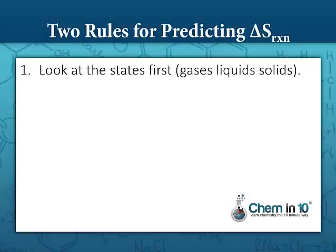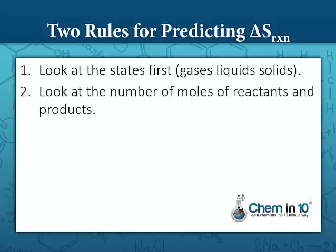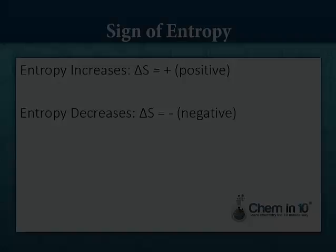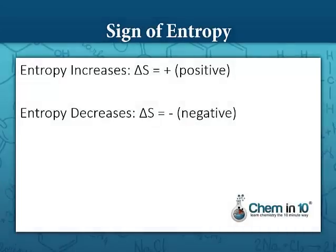There are two rules that we use for predicting delta S, the entropy change in a reaction. First we look at the states — whether we're talking about gases, liquids, or solids — and then we look at the number of moles of reactants and products. When entropy increases, delta S is positive because delta S equals final entropy minus initial entropy. If final entropy is greater than initial entropy, it's positive. If entropy decreases, delta S is negative — final entropy minus initial entropy is negative.